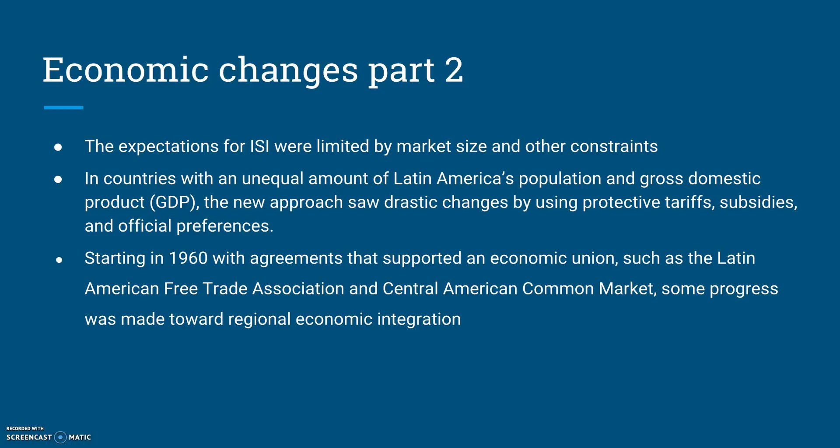In the small Caribbean and Central American republics, as well as some South American nations, the expectations for ISI were limited by market size and other constraints, and the government still hesitated to promote manufacturing at the expense of national items and materials. These weren't the biggest countries yet, and their population growth was still developing. Therefore, even though their domestic production might have increased, there were not enough people to buy goods and seriously sustain the economy in that sense. Where countries had unequal or insufficient population and the GDP couldn't match that, they utilized tariffs, subsidies, and official preferences to build on that.